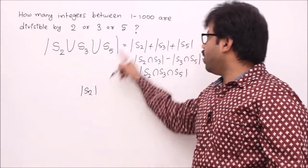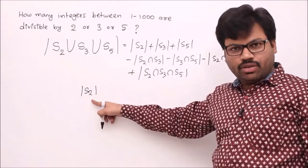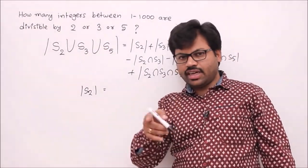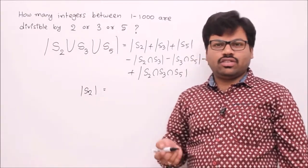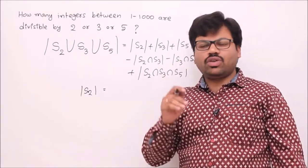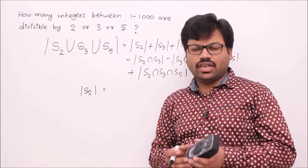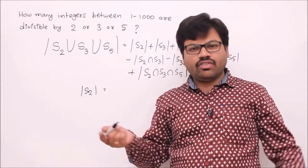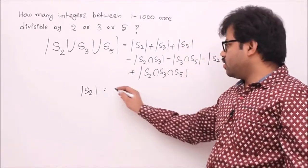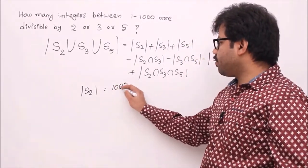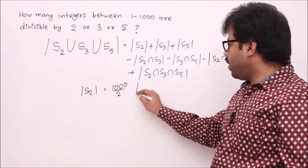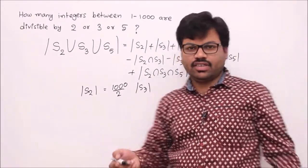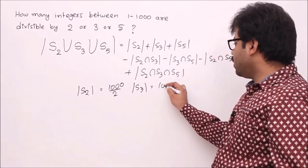Let's compute each value. |S2|: every second number is divisible by 2, so there are 1000/2 = 500 such numbers. |S3|: every third number is divisible by 3. Since 1000/3 ≈ 333.33, we take the floor, giving 333. |S5|: every fifth number is divisible by 5, so floor(1000/5) = 200. We use floor throughout whenever the division isn't exact.